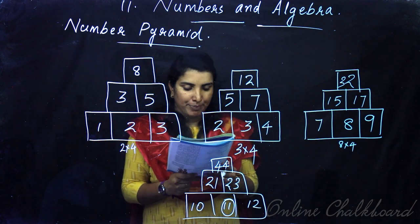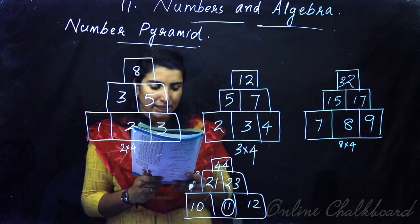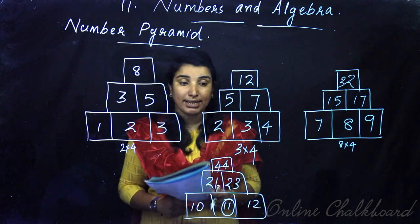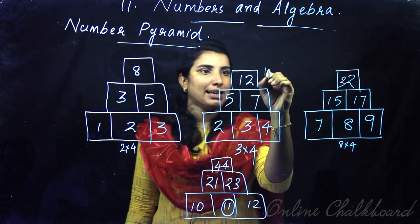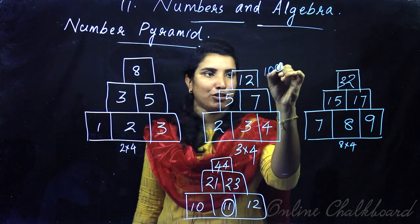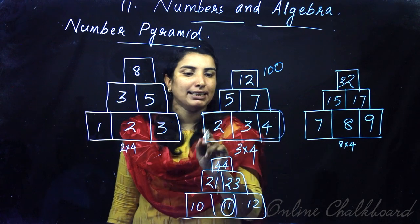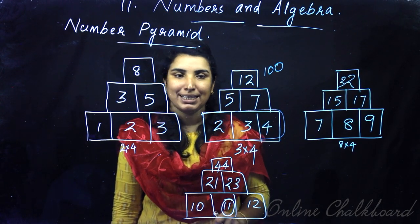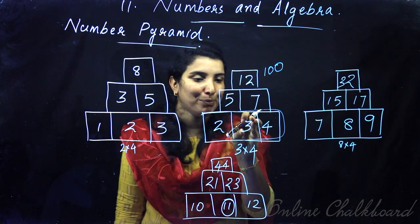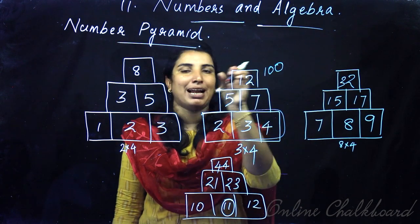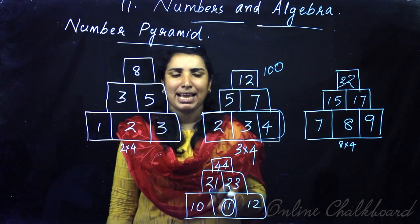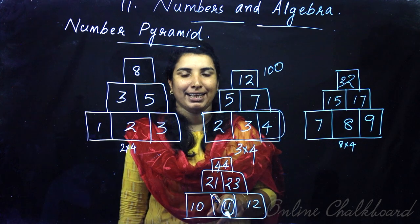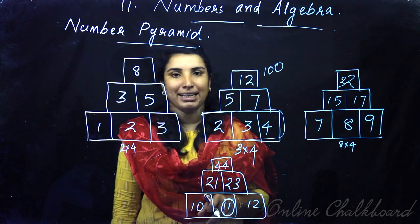What 3 consecutive numbers should we start with to get 100? This is the 100. This is the middle row. How many numbers are 4? It's 25 and 40.